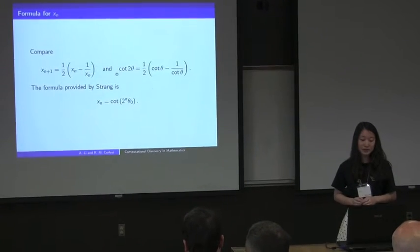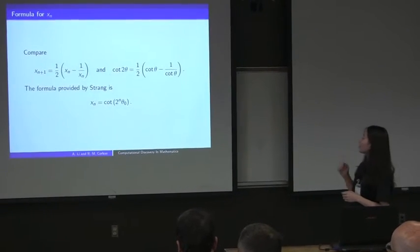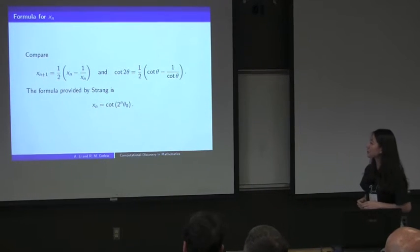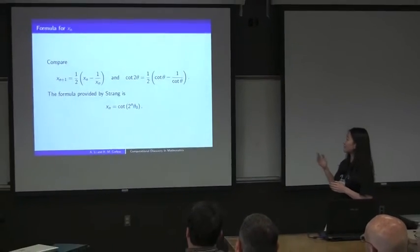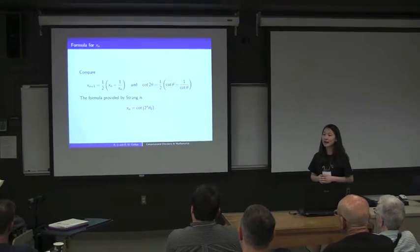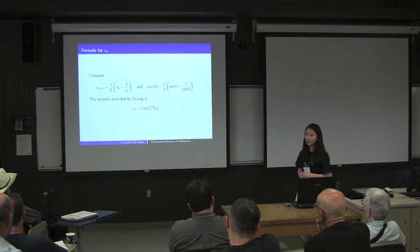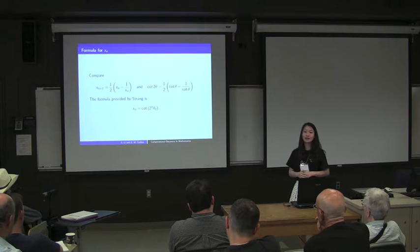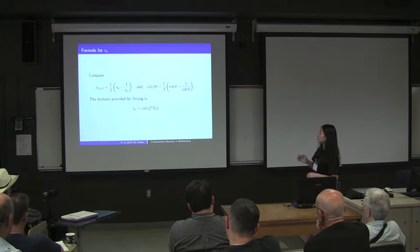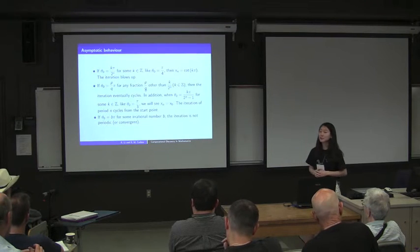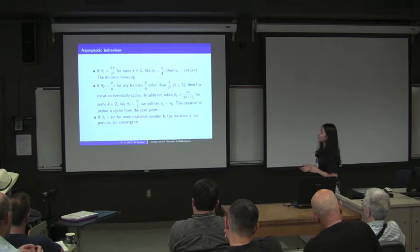To solve this problem, the author found a trigonometric identity which looks very similar to the recursive formula. If we let Xn equal the cotangent of an angle, then the next iteration gives the cotangent of double the angle. The formula is Xn equals cotangent of 2ⁿ times the initial angle θ₀. With this formula it is much easier to analyze the asymptotic behavior.